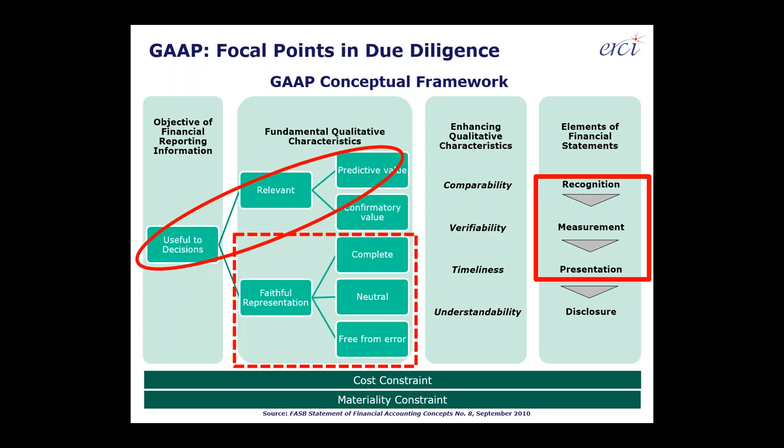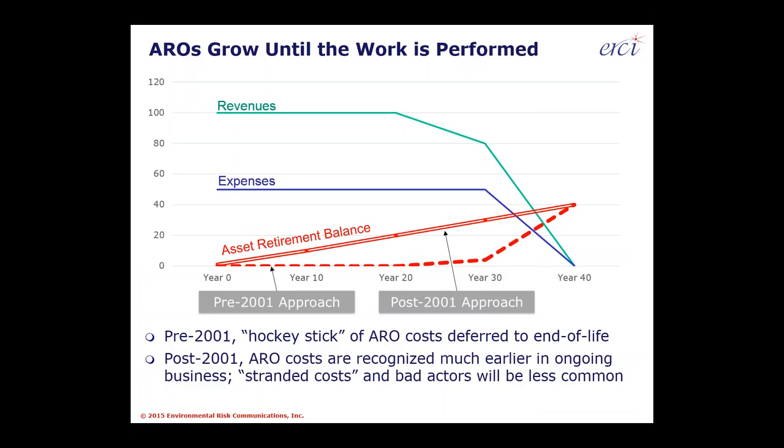The principle we're working under is that financial reporting information — even used internally — has got to be decision useful, which means it must have both predictive value and confirmatory value. Numbers also have to have faithful representation and be complete, neutral, and free from error. These are terms from FASB, one of the accounting standard setters in the U.S., and it's a useful framework for making sure we're speaking with a common vocabulary.